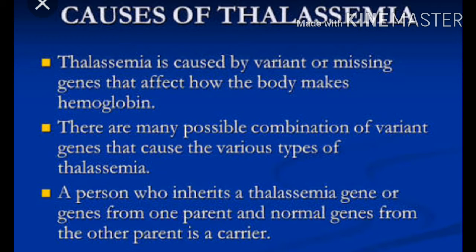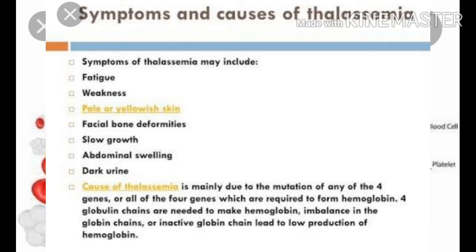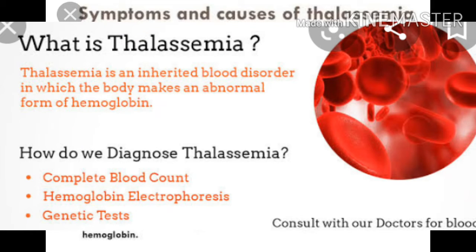As a result, free globin chains, which are insoluble, accumulate inside the red cell and form precipitates that damage the cell, causing cell lysis and resulting in anemia. Thalassemia can be classified according to which chain of the hemoglobin molecule is affected.